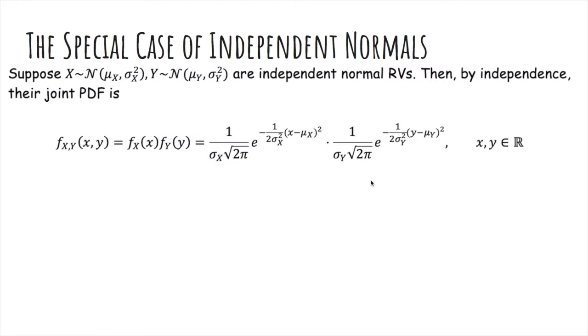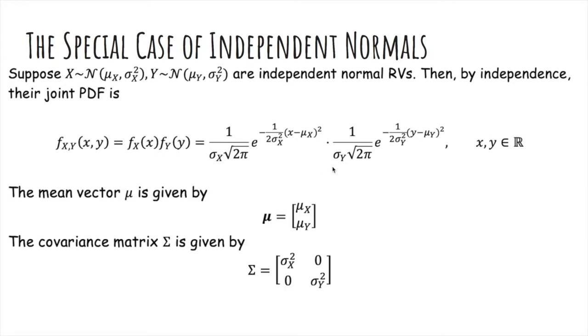Okay, so now for the special case of independent normals. If X and Y are independent and normal random variables, their joint density function we know is the product of their individual ones. And this is nothing special, just plugging in the density for univariate Gaussian. The mean vector mu is just mu x mu y, and the covariance matrix has their variances along the diagonal, and 0 everywhere else because they're independent.